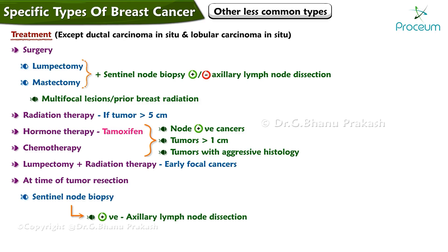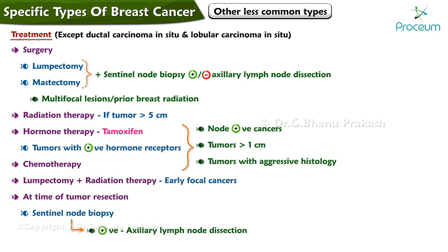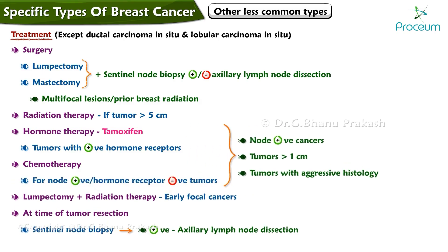Hormone therapy is used for tumors with positive hormone receptors. Chemotherapy is indicated for node-positive or hormone receptor-negative tumors. Trastuzumab is used for tumors with HER2/neu receptors.